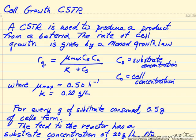In this example, we're looking at a CSTR where we're growing cells and using this reaction to produce a product from bacteria growth. The rate of cell growth follows the fairly standard form of the rate law where CS is the substrate concentration and CC is the cell concentration.